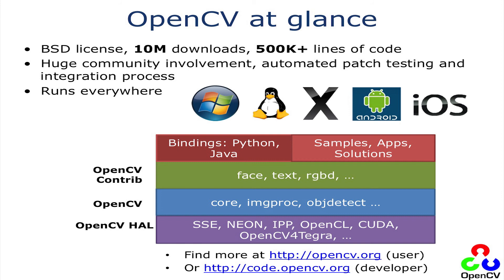There's a user site for people who just want to download the code — that's OpenCV.org. You go to the code site if you're a developer. On the code site there's a lot of other information: planning meeting notes are open, I keep a record there, and all the contests, workshops, and things we're doing are there. Often the workshops will show up as a news feed on the user site.